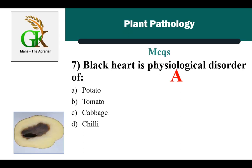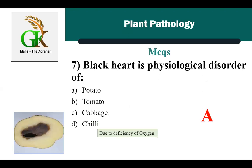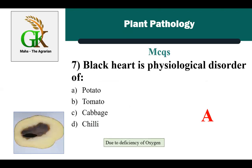The next MCQ is: black heart is a physiological disorder of — the correct answer is A: potato. Black heart of potato is caused due to deficiency of oxygen.